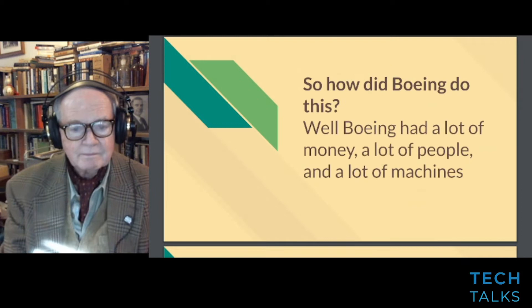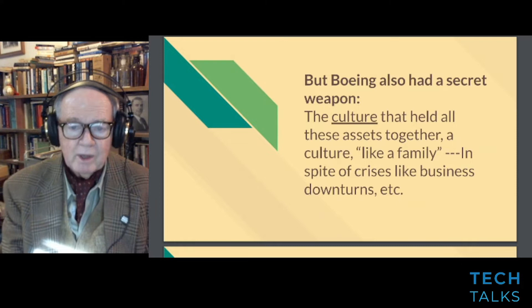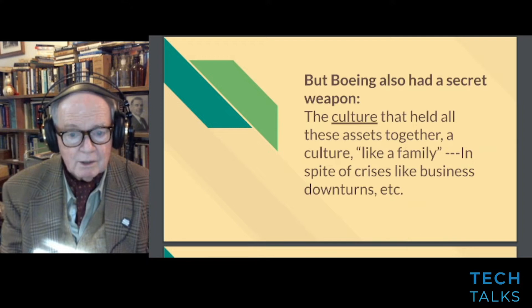How did Boeing do this? Boeing had a lot of money, a lot of people, and a lot of machines. But Boeing also had a secret weapon: the culture that held all these assets together. A culture like a family, in spite of crises like business downturns and so forth.